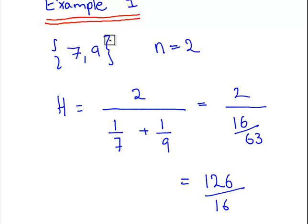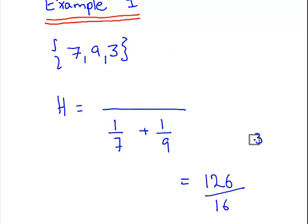Suppose I add in 3. What happens then? So we have to start again here. What's the harmonic mean now? So we have 1 over 7 plus 1 over 9. We'll also add in 1 over 3. And the sample size is now 3, so a 3 goes up here.